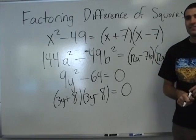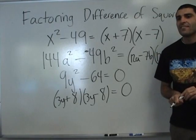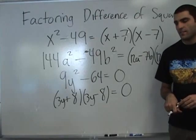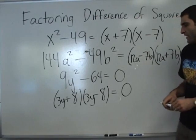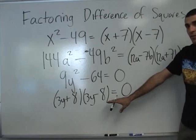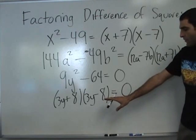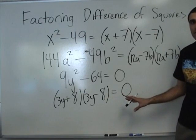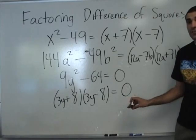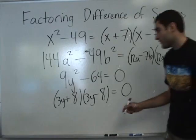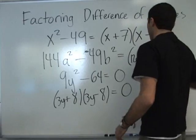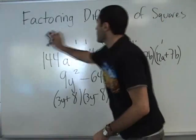With difference of squares, does it always have to be plus and minus? Yes — or minus plus. Do you remember how to solve when you have a factored equation equal to 0? What do you do to each factor? Make each one 0. Correct. So let's make each one equal to 0.